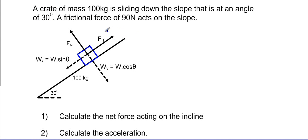Basically we see that we have a frictional force of 90 newtons, and we know that if we take our weight of 100 kilograms going down, then we can break up the weight into our parallel and perpendicular component, which is wx and wy. And we know that wx is always equal to w sin theta, and wy is equal to w cos theta.